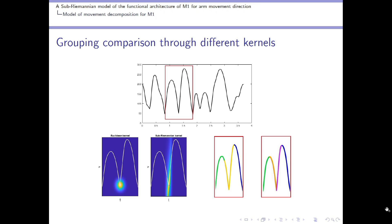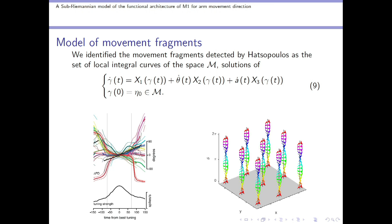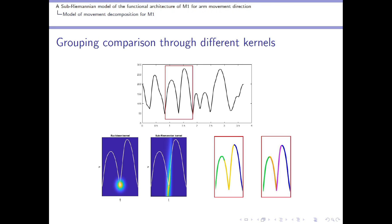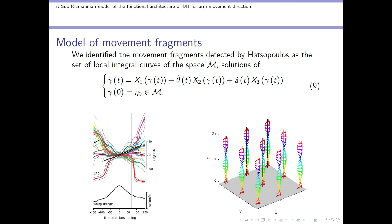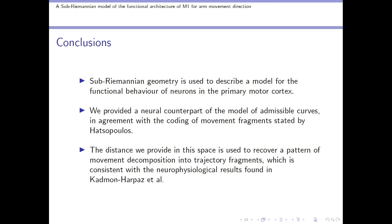Therefore, by using just a distance based on a space of purely kinematic variables, we are able to reproduce the pattern of movement decomposition found neurally, but also we recover the neural model of Hatsopoulos where neurons actually code for fragments, not only for single movement parameters. On the right, it is displayed a schematic representation of this type of behavior.